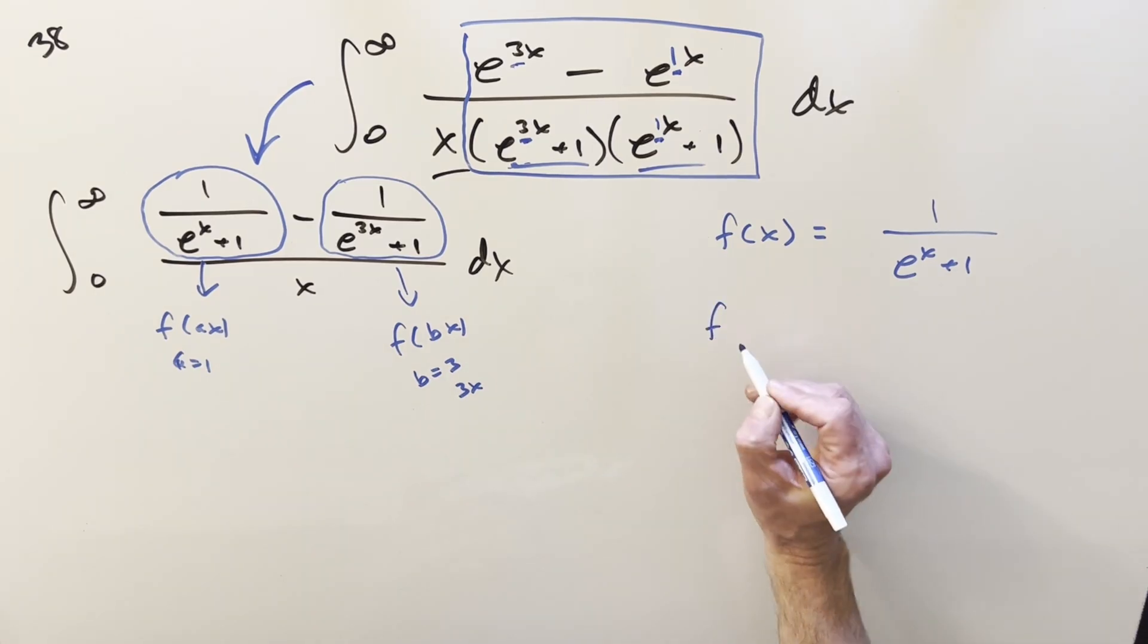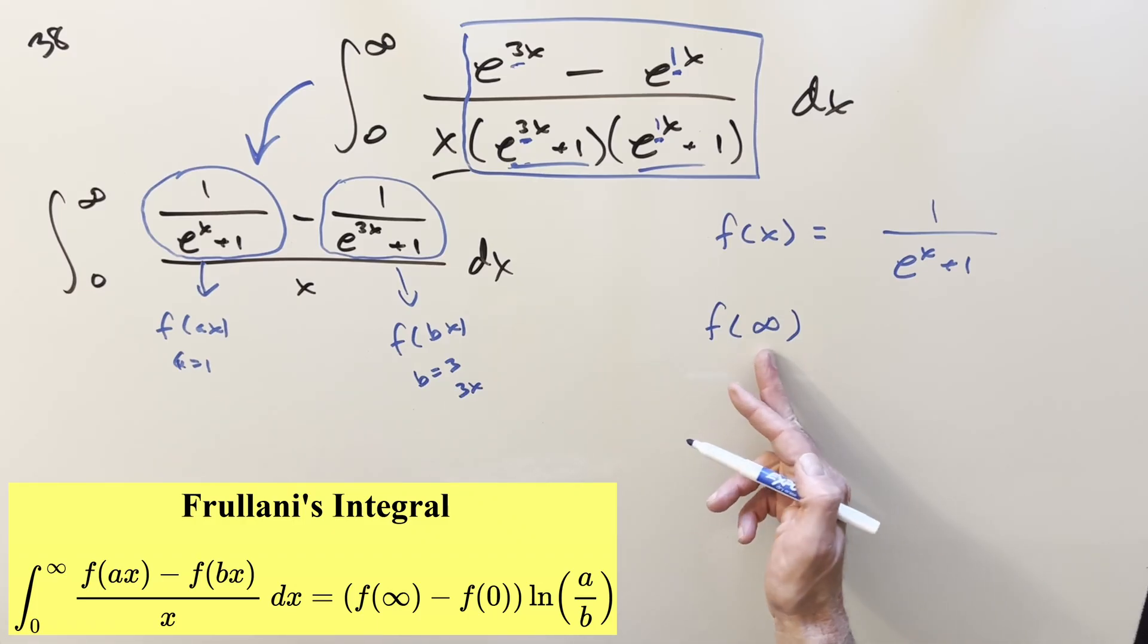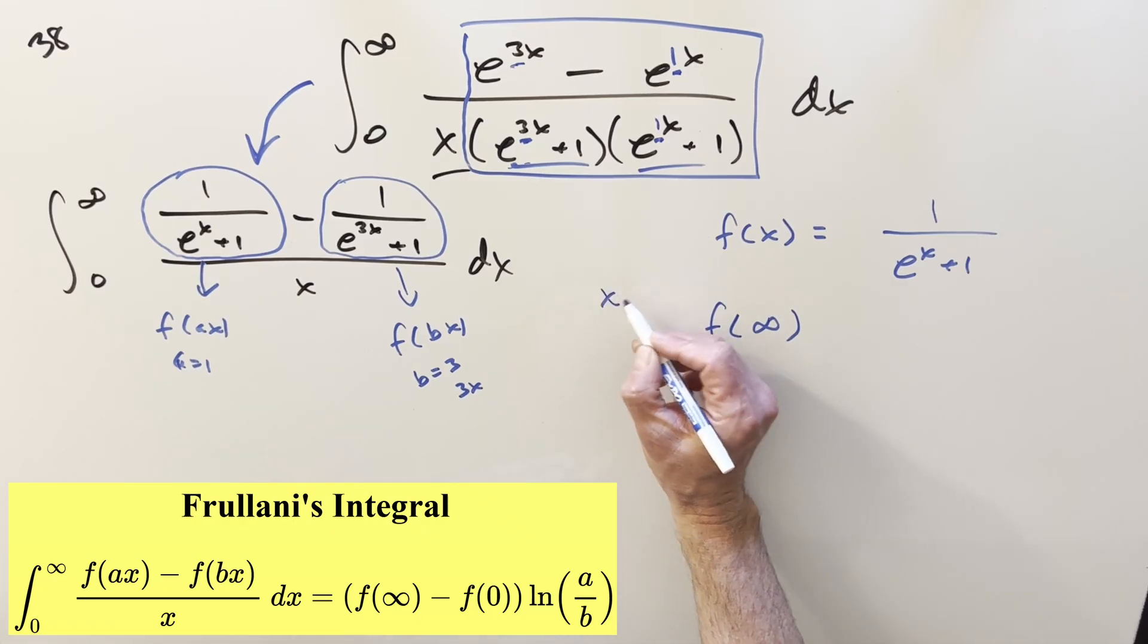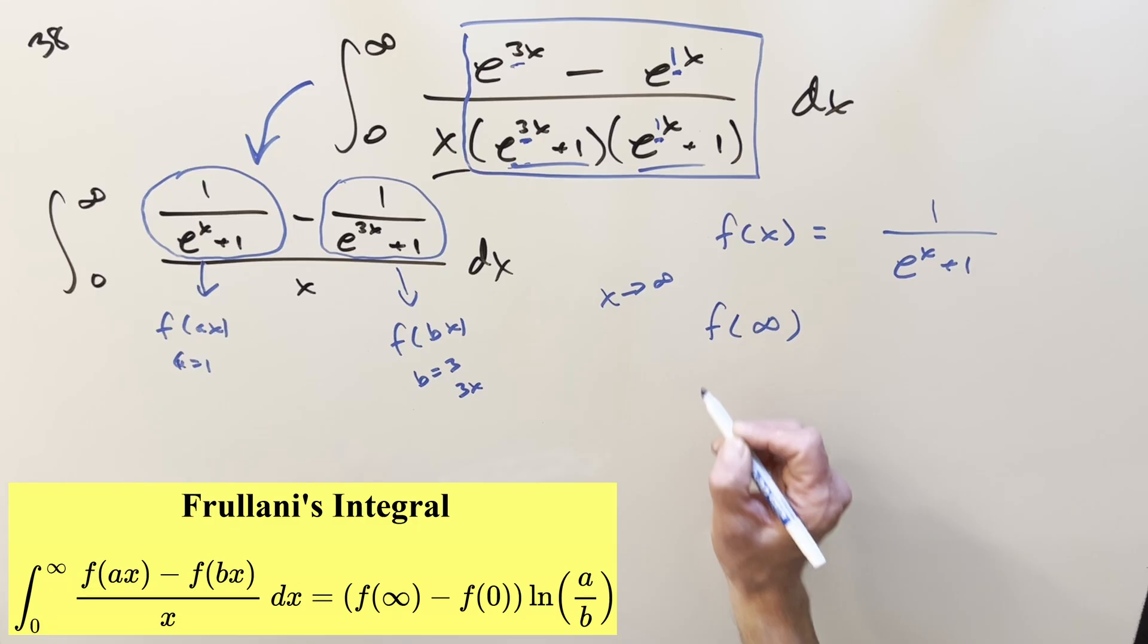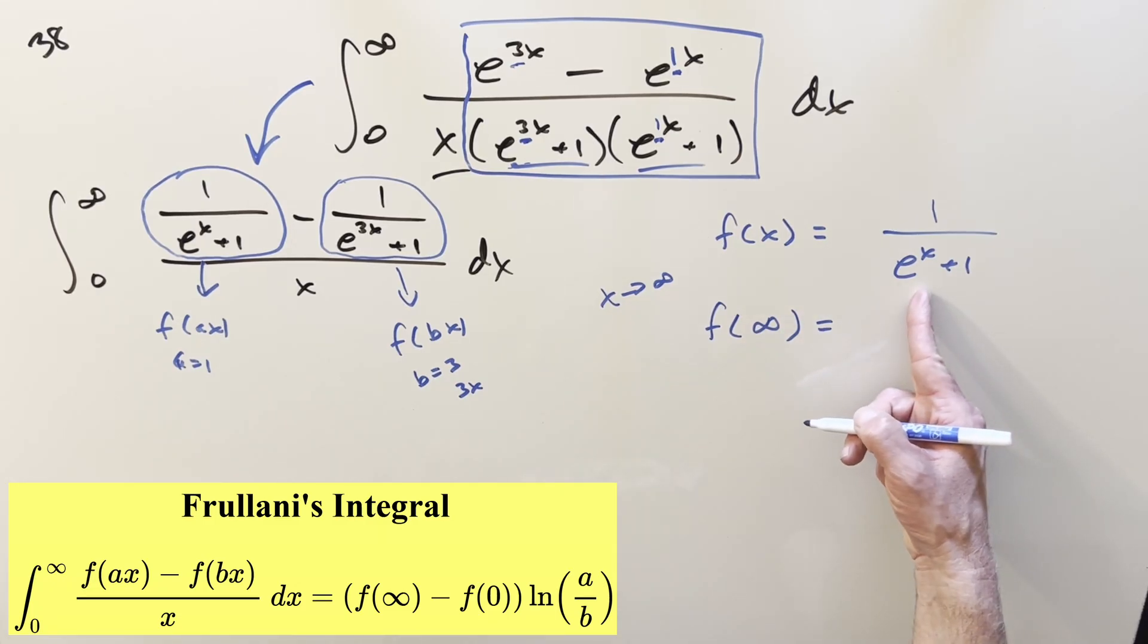So what we're going to need on it is going to be, for the formula, we're going to need f at infinity. I know this isn't really the right notation. Think of this like a limit as x is approaching infinity. But anyway, when you do that and you plug in infinity here, the whole denominator is going off to infinity. So this is going to be zero.